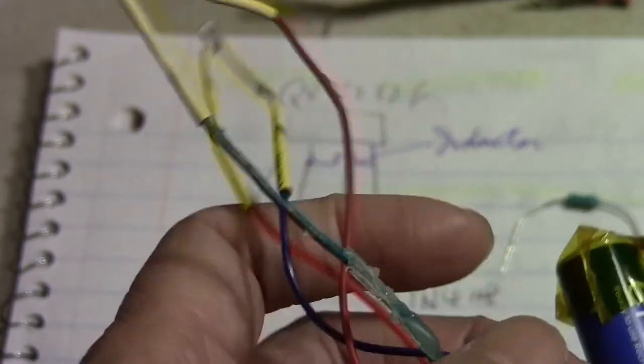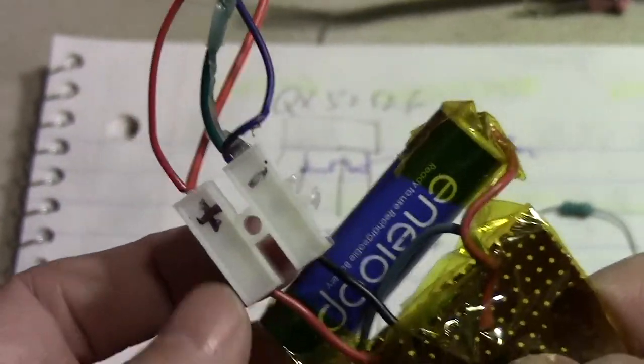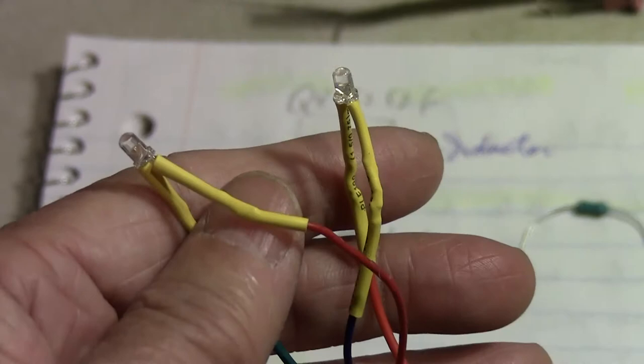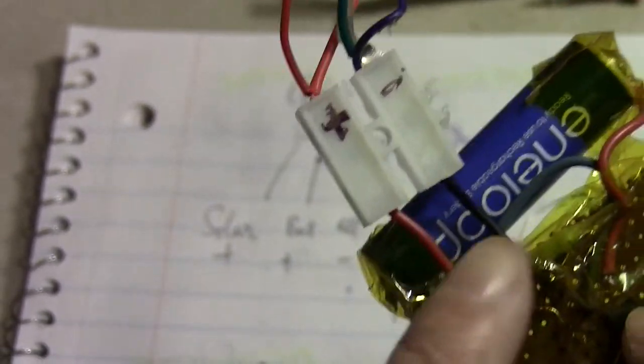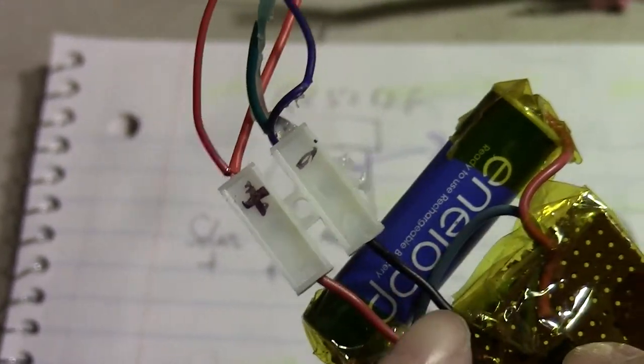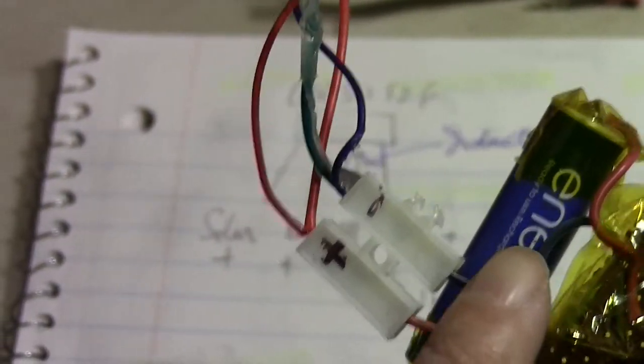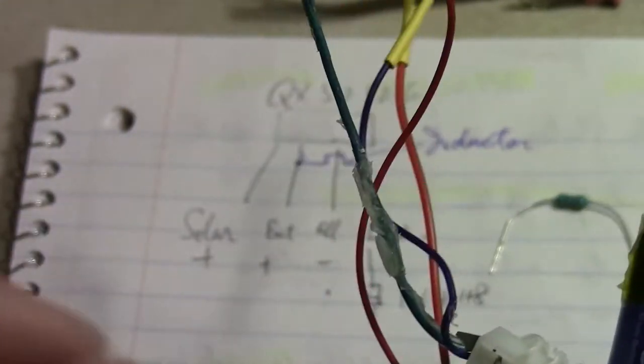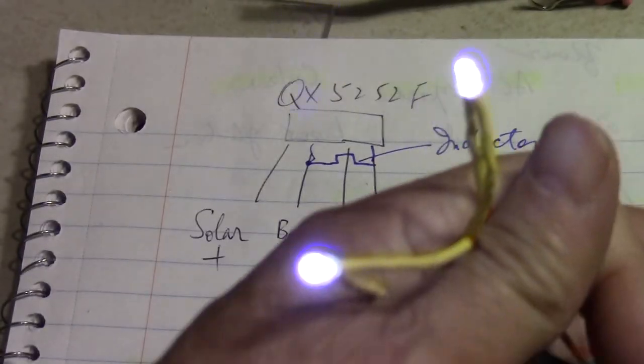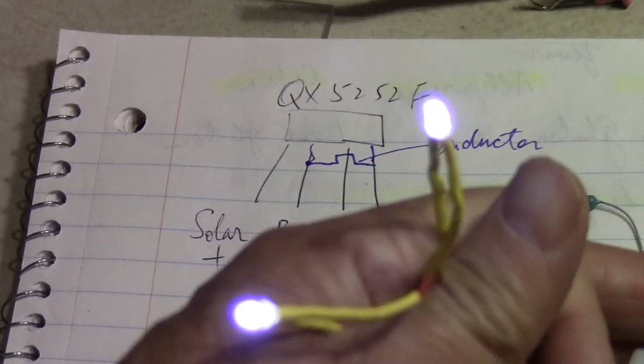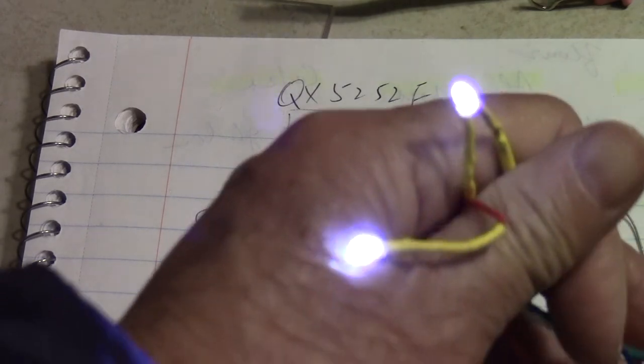This single battery will power the LEDs for hours and hours. Because this is not like the regular way of powering an LED. This uses very high frequency pulses. So the LED seems to be on all the time. But actually the light is pulsing. Or the LED is pulsing very fast.